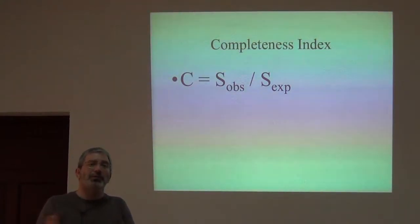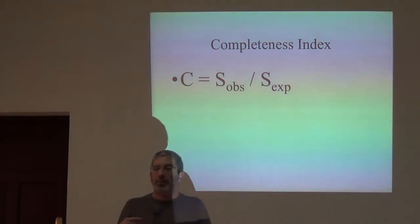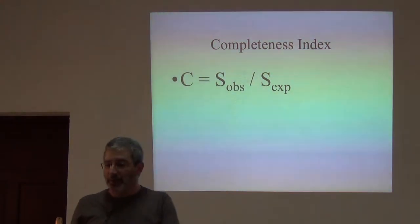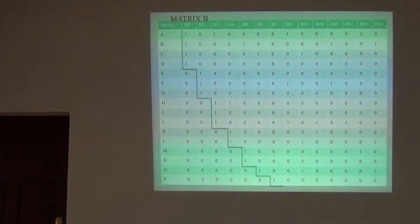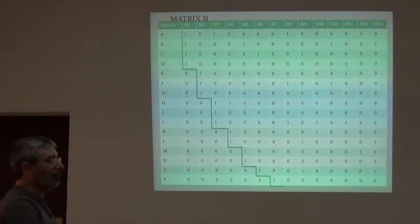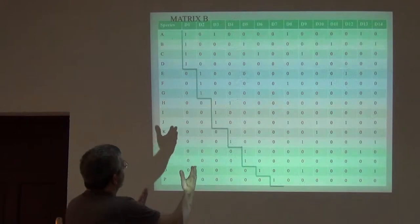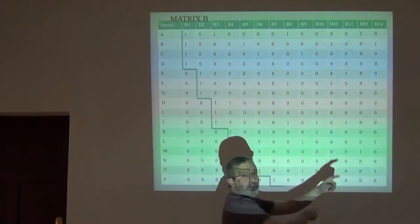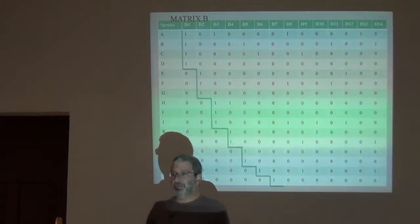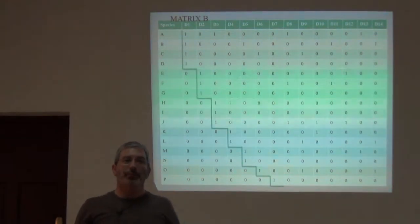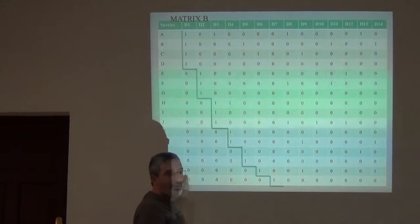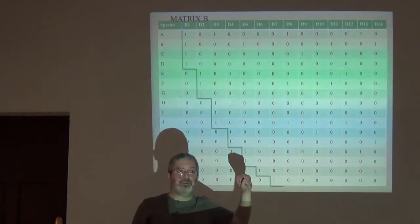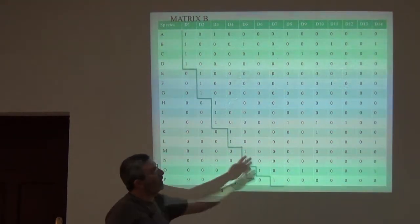Now the only modifications that Estimate S makes is that instead of using the raw data the way we did, we used just those data that could have been collected in the field. Estimate S will take the order of these rows and mix them up. And in fact it'll do one better. If you gave it this matrix, which we will this afternoon, if you give it this matrix,